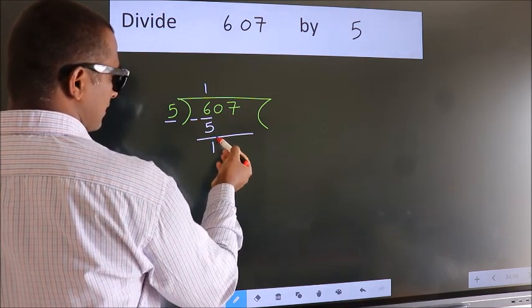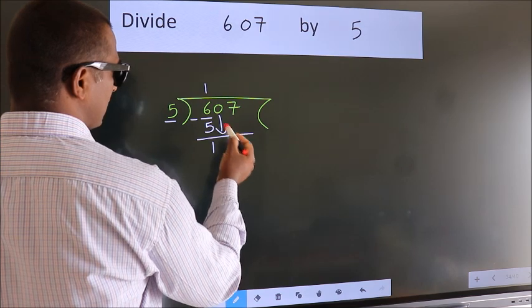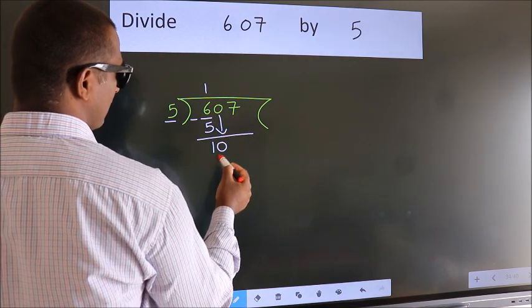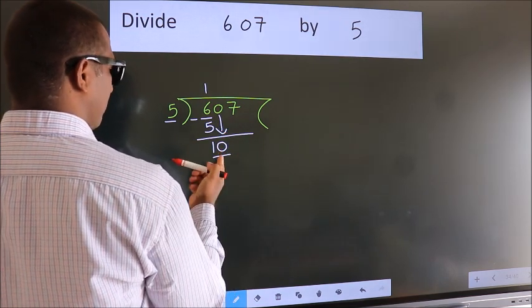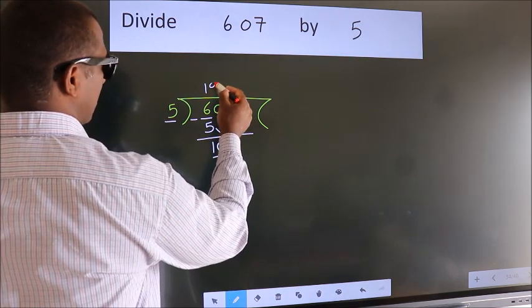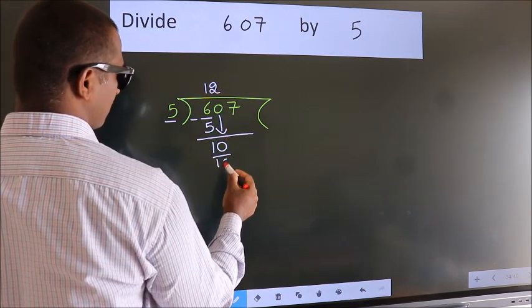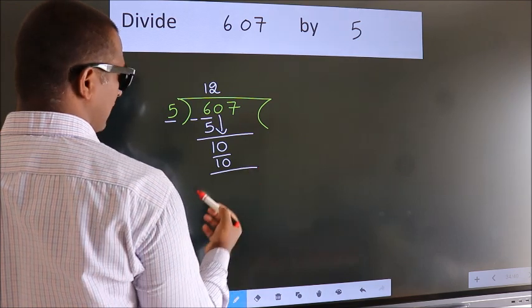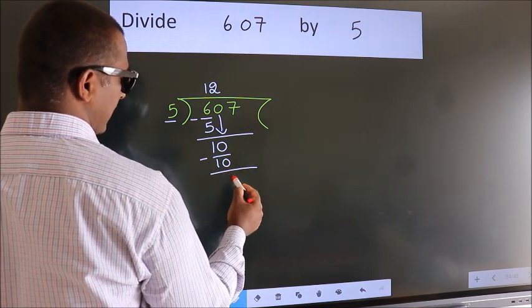After this, bring down the beside number. So 0 down. So 10. When do we get 10? In 5 table, 5 twos, 10. Now we subtract. We get 0.